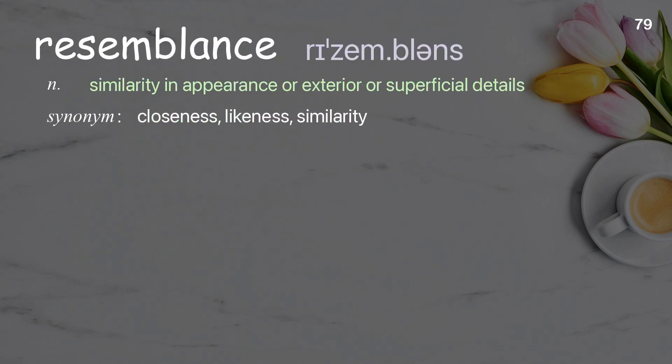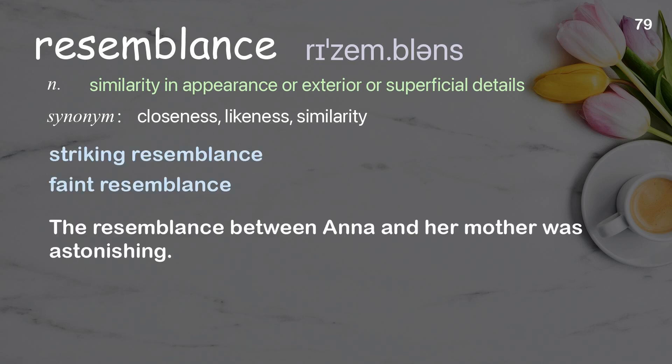Resemblance: similarity in appearance or exterior or superficial details. Examples: striking resemblance, faint resemblance. The resemblance between Anna and her mother was astonishing.